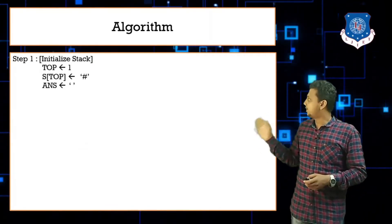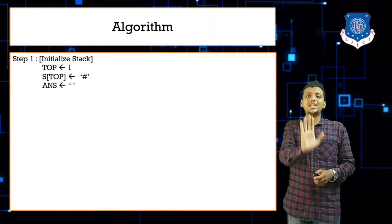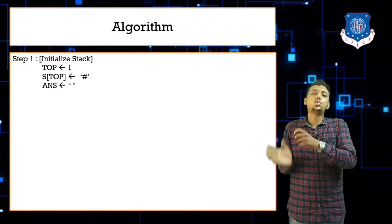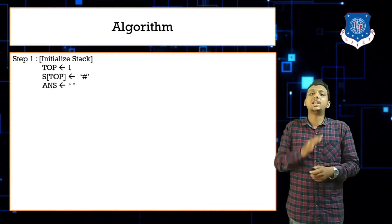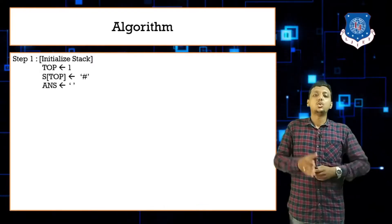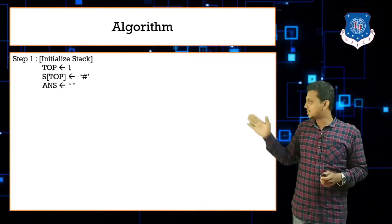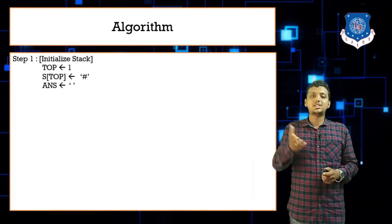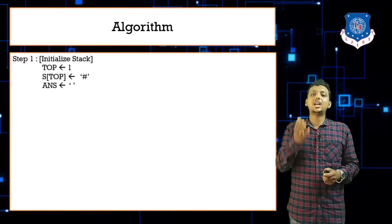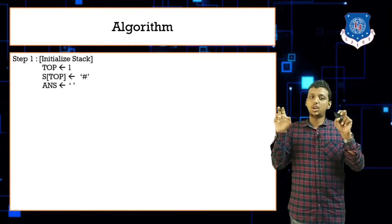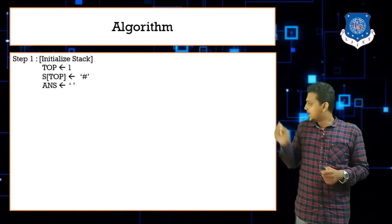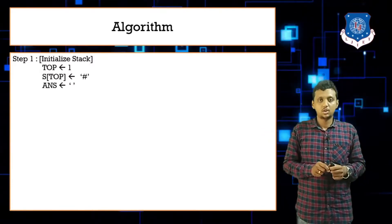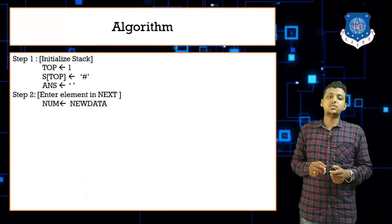Now let's look at the algorithm for decimal to binary conversion. First, initialize the stack with hash: set top = -1 and S[top] = hash. This helps retrieve values easily. Then set answer = number, where answer will contain all the appended binary digits.